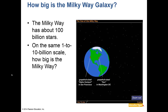How big is the Milky Way galaxy? Estimates range from 100 to 200 billion stars — we haven't counted them all. On that same scale, the Milky Way is 100,000 light years across, so a star on one edge sending light to the other edge takes 100,000 years for that light to reach there.